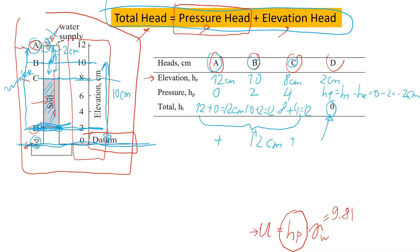Now let me explain why the total head at D is zero. Water flows through the soil because of a difference in total heads. Water enters the soil at point C with a maximum total head of 12 centimeters. Once it flows through the entire soil sample and reaches below the soil, the total head becomes zero because there is no more soil to flow through. So at point D, the total head is zero. I have videos about flow diagrams and water flow where I explain this further — I'll put those links in the description.